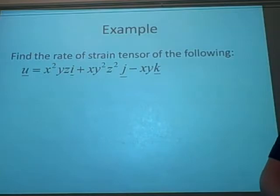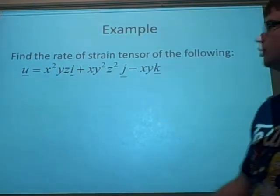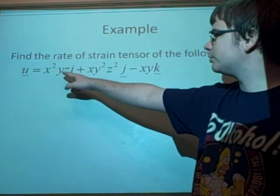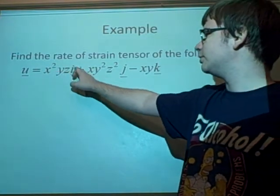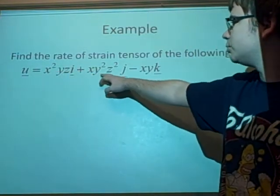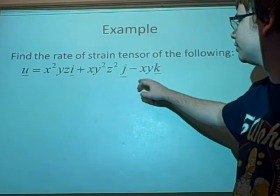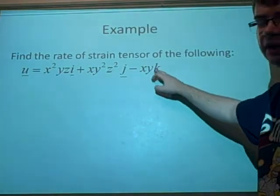Right, now we've got an example using that. We want to find the rate of strain tensor for the following. So we've got u is given by x^2 yz in the i component, xy^2 z^2 in the j component, minus xy in the k component.